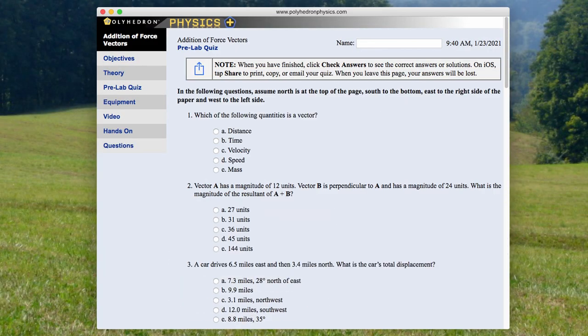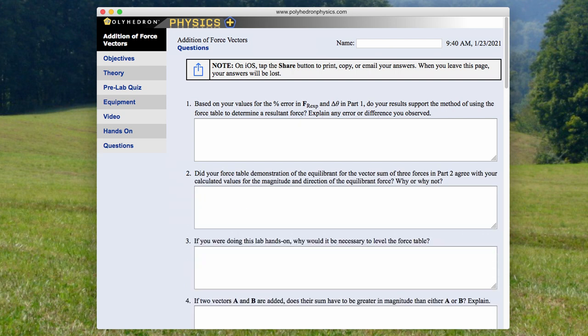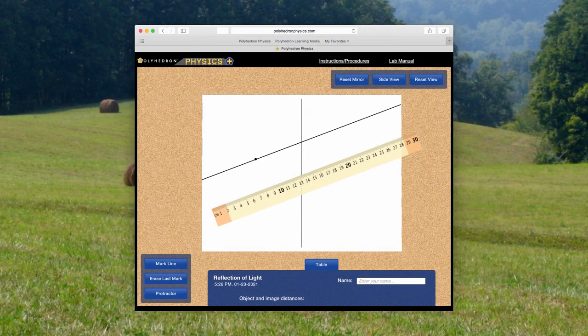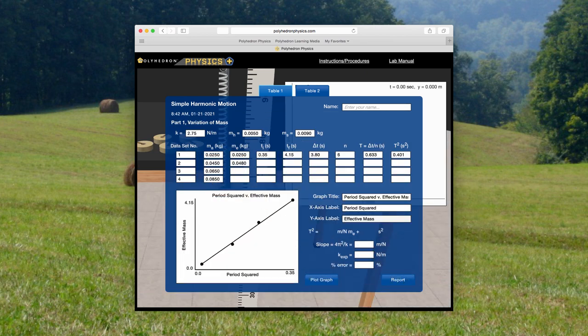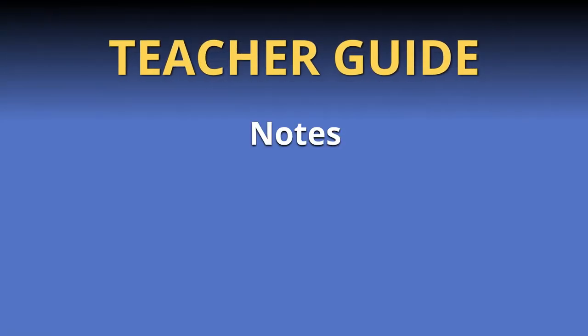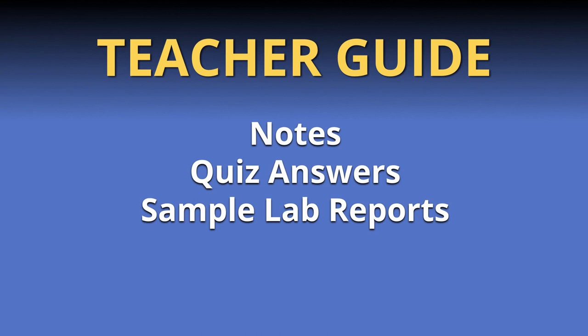Polyhedron Physics Plus labs are complete, with all necessary supporting materials included: experimental procedures, background theory, data analysis and reporting tools, pre- and post-lab quizzes, and a teacher guide with notes, quiz answers, and sample lab reports.